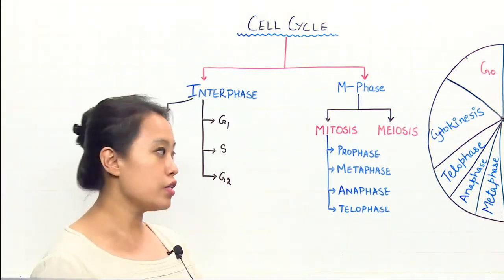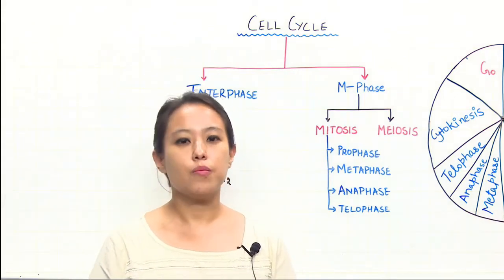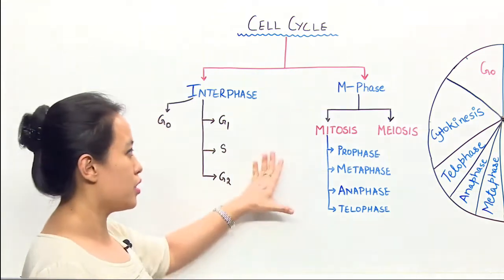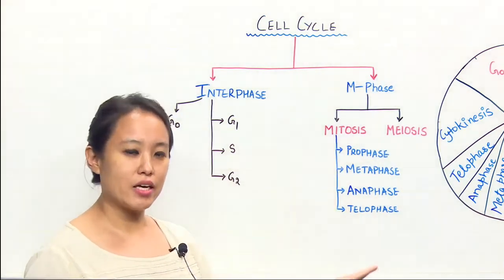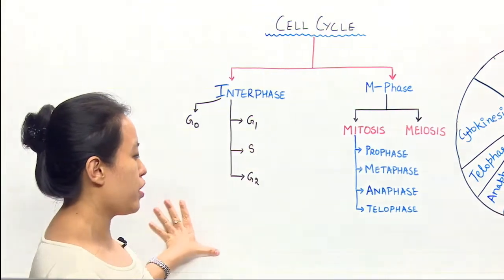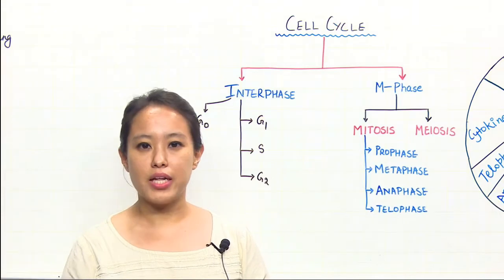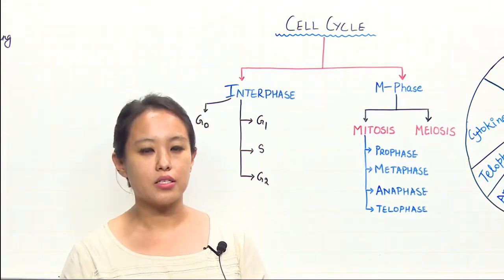If you see further, mitosis has been subdivided into prophase, metaphase, anaphase and telophase. Before we go ahead with the Cell Cycle, I want you guys to look at interphase. Interphase is that phase of Cell Cycle which occupies 95% of the Cell Growth Cycle stage.